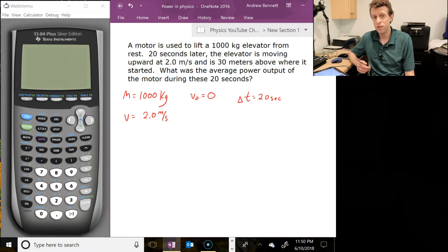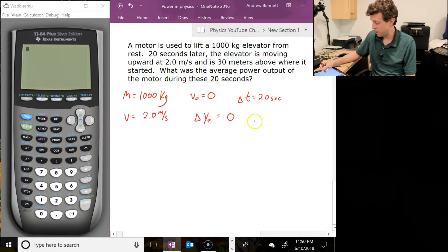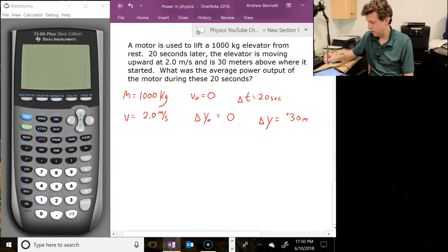So v is 2.0 meters per second, and is 30 meters above where it started. Okay, so we don't know where exactly it started, but we get to define our reference levels on these. So I'm going to say that the starting height, the delta Y naught, is going to be zero. And the ending height, delta Y, is going to be 30 meters above that. So positive 30 meters.